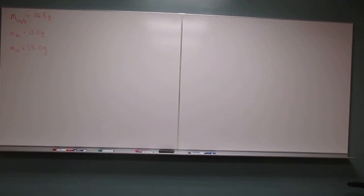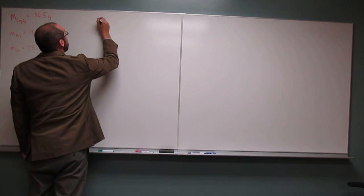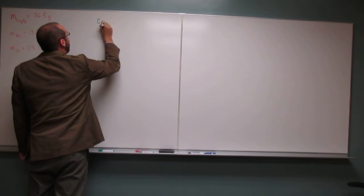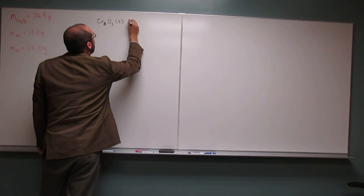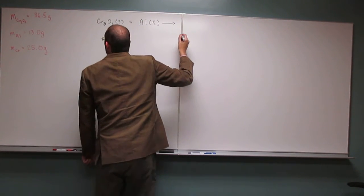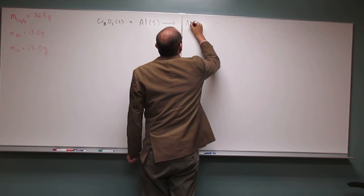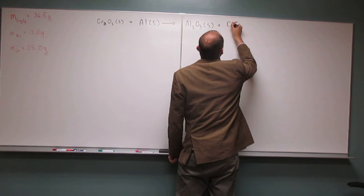The reason I've written down the formulas for chromium 3 oxide, aluminum, and chromium is just because I know them. I'll write down the equation that it says: chromium 3 oxide plus aluminum goes to aluminum oxide plus chromium.